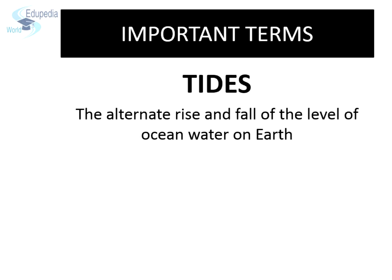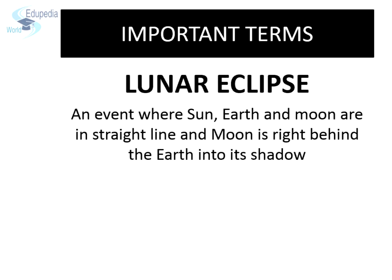Tides: Tides are the alternate rise and fall of the level of ocean water on Earth. Lunar eclipse: an event where Sun, Earth and Moon are in a straight line and the moon is right behind the Earth in its shadow.